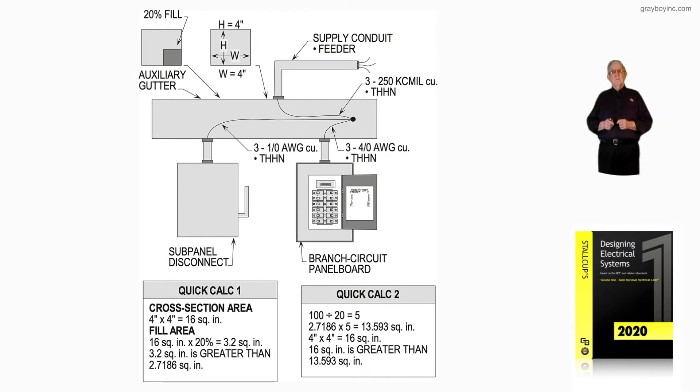This illustration deals with the sizing of an auxiliary gutter or even a wireway. Notice we have a feeder at the top of the auxiliary gutter, and those conductors are large. There are three of them, 250 KCMIL THHN.